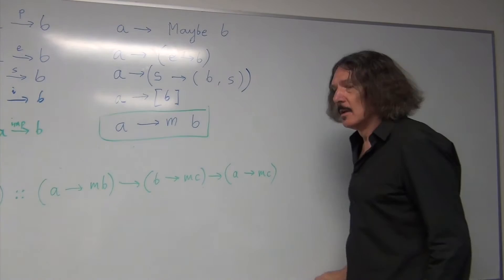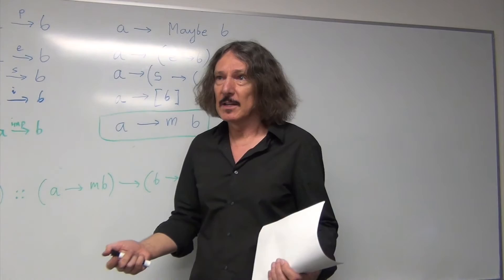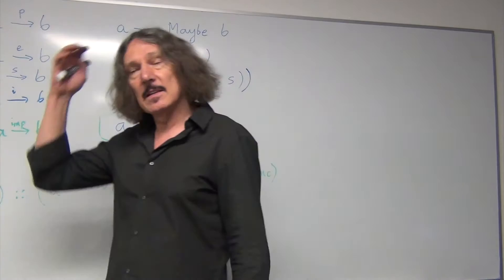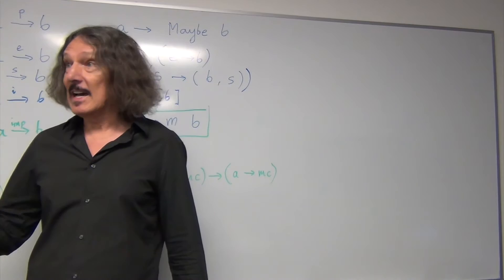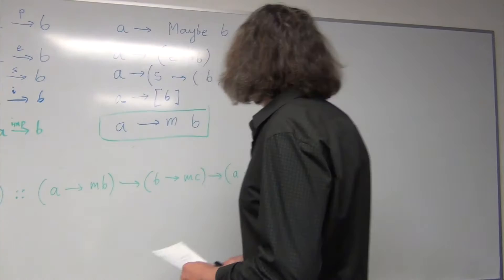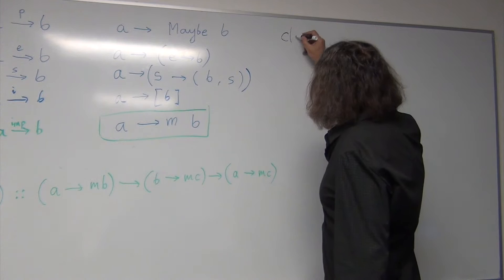So, we have, just like we define what a functor is, by specifying, by abstracting the type constructor and saying that it has to... It's a class of type constructors that supports FMOP. Here it's a little bit bigger mouthful, but it's the same idea.